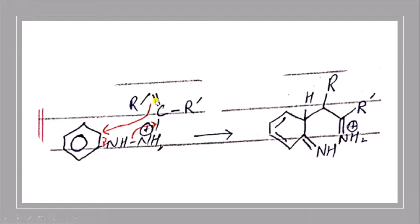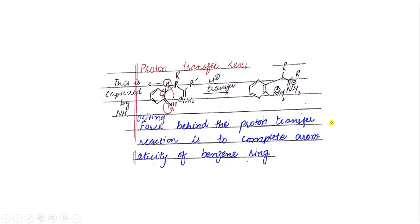In the next step, the pi bond of the benzene ring attacks this carbon, sharing electrons. As a result, there is a temporary destruction of the aromaticity of the benzene ring. This bond then transfers further, and at the end there is a ring closure.